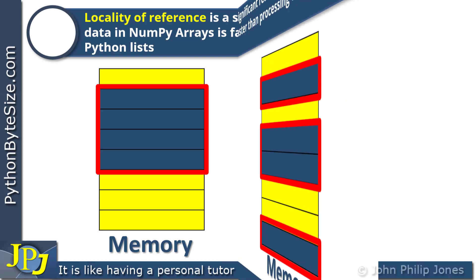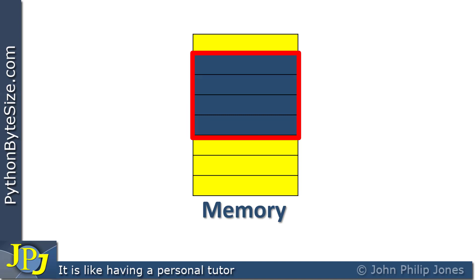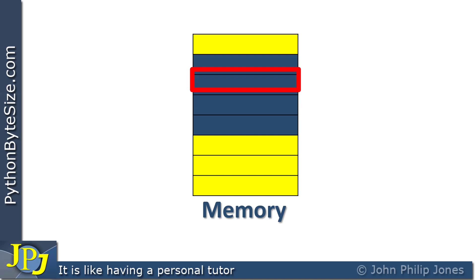Let's consider the memory for a typical ndarray. You can see that items are stored in consecutive memory locations with no gap between any of them. When dealing with an ndarray, it is usual to ensure that all items are the same type — all floats or all integers — so they are all the same size. Each area of memory holding an item is identical in size to the others because they all hold the same type.